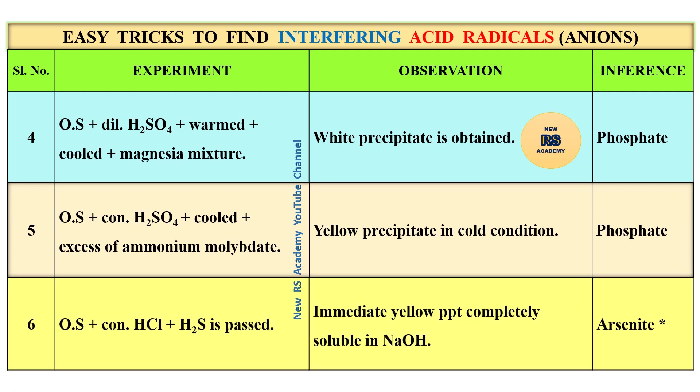The sixth test: original solution, then add concentrated HCl, plus acidic gas is passed. If an immediate yellow precipitate completely insoluble in sodium carbonate extract is formed, that is arsenide.